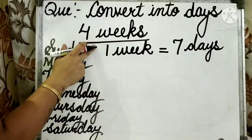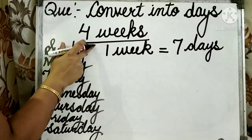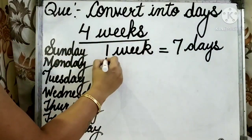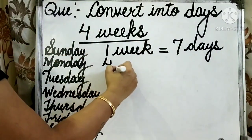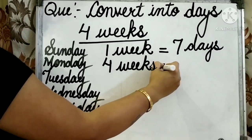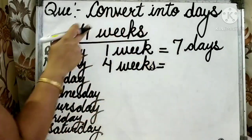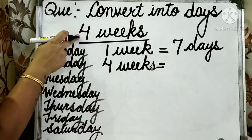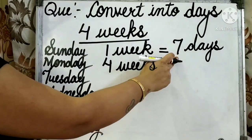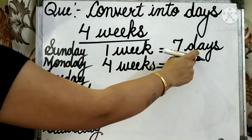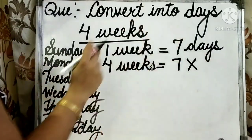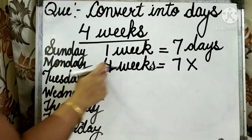Now, the question is 4 weeks. That means we have to convert 4 weeks into days. So again, we have to multiply the number of days by the given number of weeks. Here we have 7 days, so we will multiply 7 by 4.